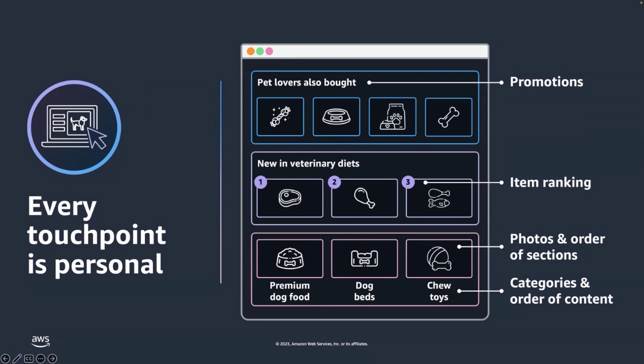Another example is in online retail, where businesses incorporate personalization into every aspect of the user experience. For example, they may want to promote items from a particular category, rank items based on user interests, or specify a rail which has different categorical items within its own experience. This is where we help our customers using Amazon Personalize.